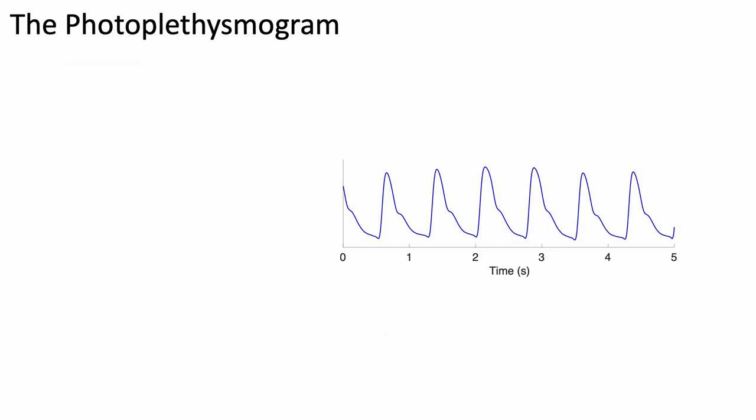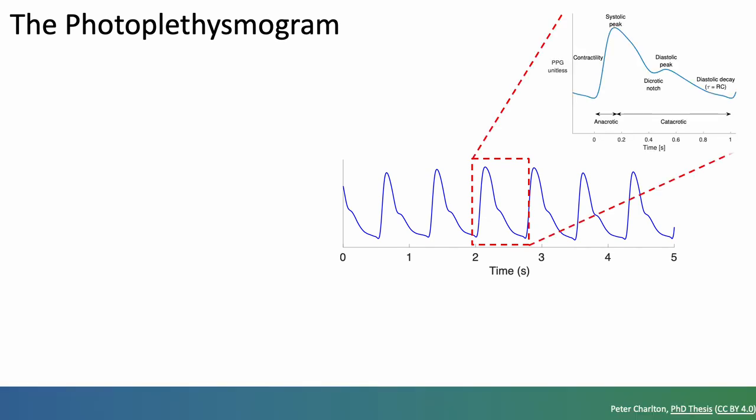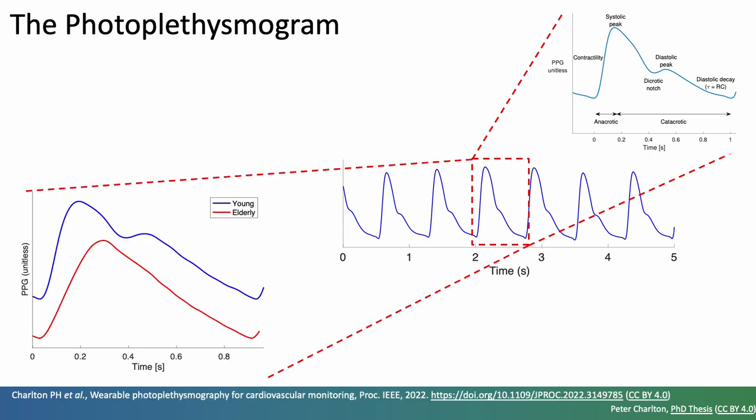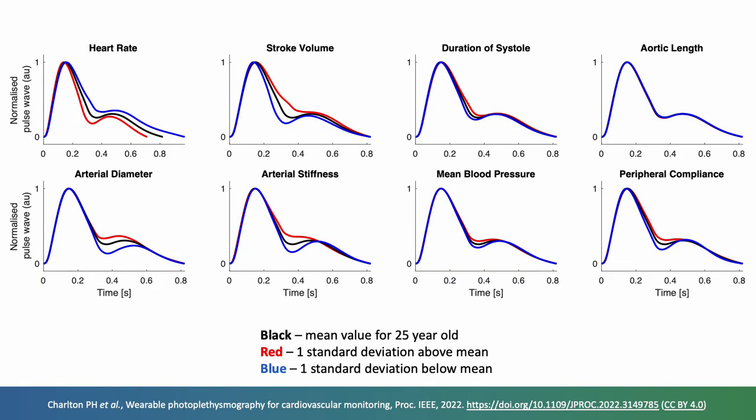The pulse wave contains a wealth of physiological information. Here are a few of the features that can be identified in the pulse wave, and these change both between young and elderly subjects shown here in blue and red, and also with cardiovascular physiology. This plot shows how the average pulse wave shown in black in each plot changes when the parameter increases shown in red or when it decreases shown in blue. So you can see how heart rate, stroke volume, and several other parameters affect the pulse wave shape.